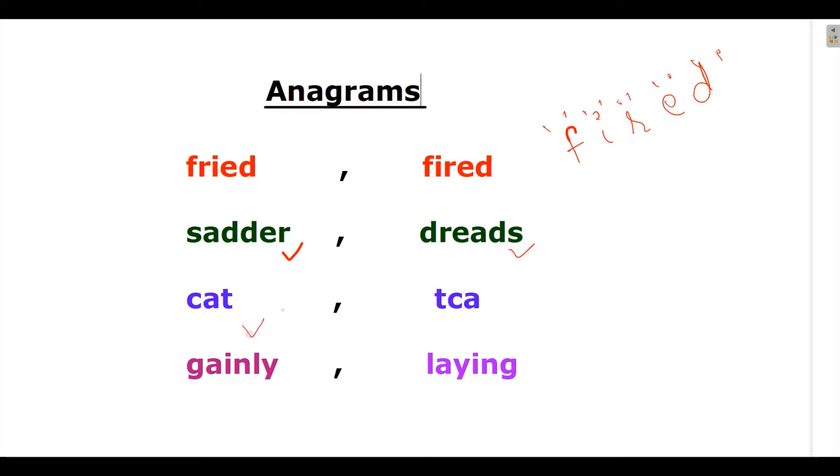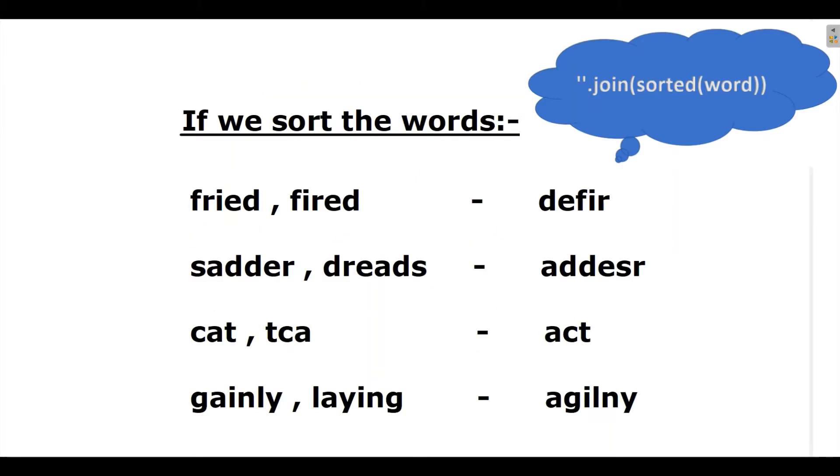sadder and dreads, cat and TCA, gainly and laying. Let's know how we can rectify that these two words are anagrams. Be with me for just five minutes. This we can do with the help of sorting.